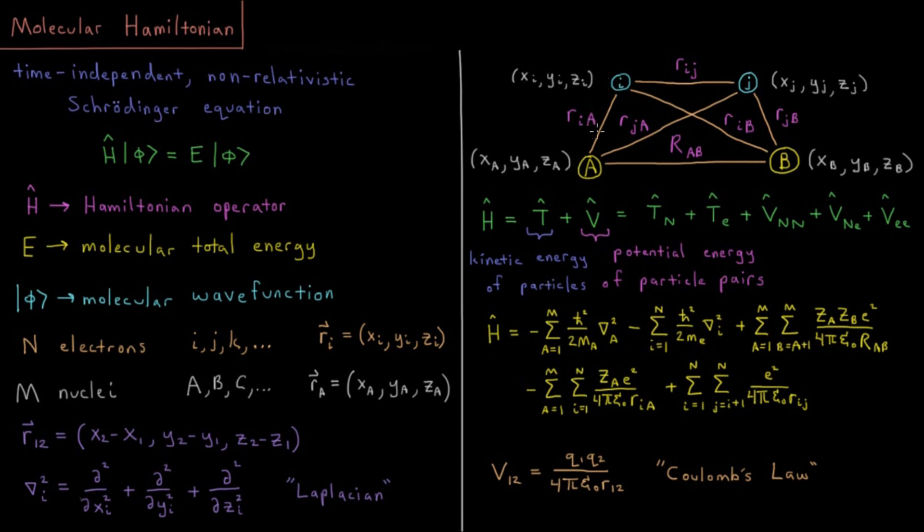We have rᵢₐ, rᵢᵦ, rⱼₐ, and rⱼᵦ. Typically the distances between all these charged particles are relevant because they all contribute terms to our Hamiltonian operator. Our total energy involves the attractions and repulsions between all pairs of charged particles. All of them have their own x, y, z coordinates.